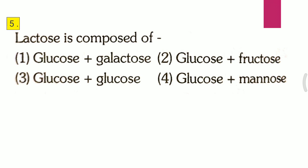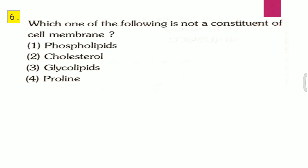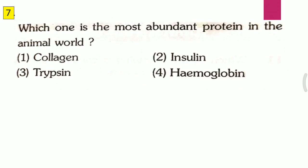Question six: Which one of the following is not a constituent of cell membrane? First, phospholipid; second, cholesterol; third, glycolipid; fourth, proline. The correct answer is the fourth one, that is proline.